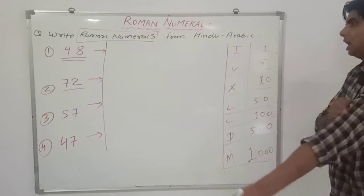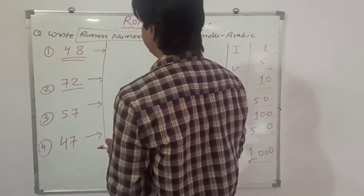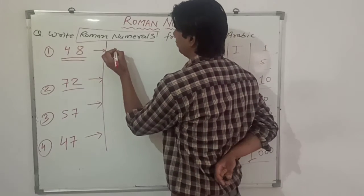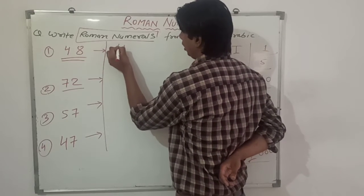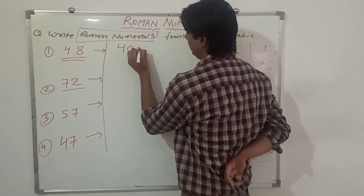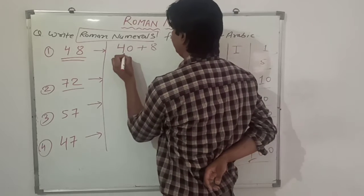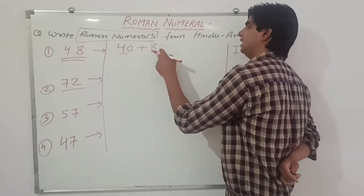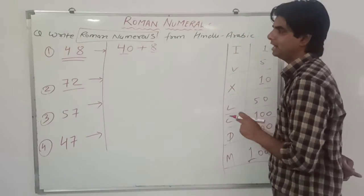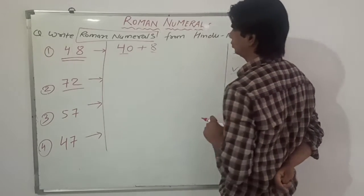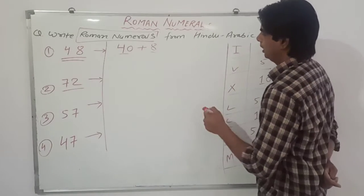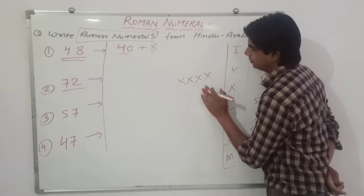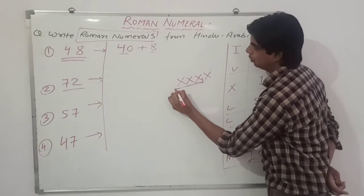Now we will solve the first question, which is 48. We will break it down: 48 equals 40 plus 8. We break it into tens and ones — 40 plus 8 — and now we will write Roman numerals for both. For 40, can we write XXXX? No, because we have repeated X more than three times.